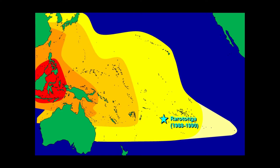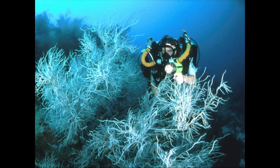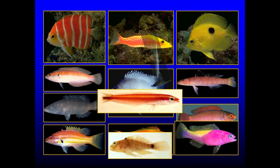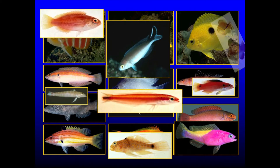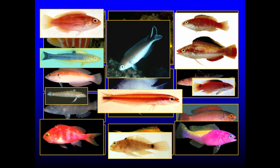In 1995, we took some rebreathers to Papua New Guinea and did a series of deep dives in the Milne Bay region with high expectations. Sure enough, we found a whole lot of new species there — again, this is just a small sample. We were very excited, except we were a little bit surprised because we didn't find that many more new species in New Guinea than we had found in Rarotonga.